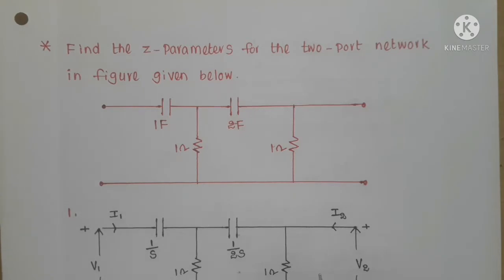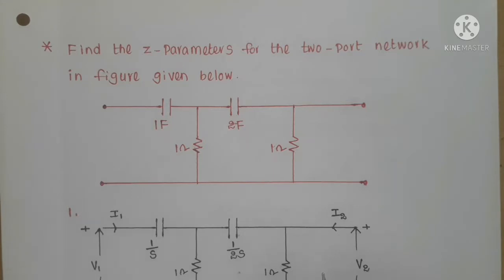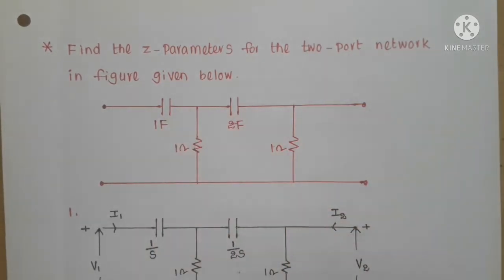We divide two-port networks into three models. Model one is when all elements are resistors. Model two is when along with resistors there are dependent sources. Model three is when there are energy-storing elements in the circuit. Here there are two capacitors — one farad and two farad — which are energy-storing elements, so we classify this as model three.